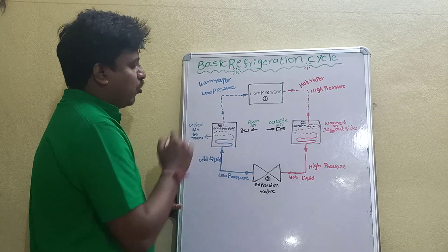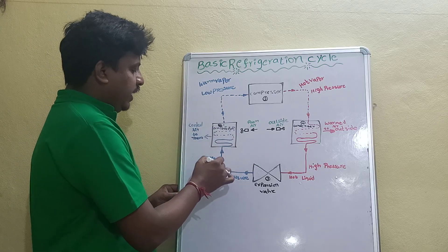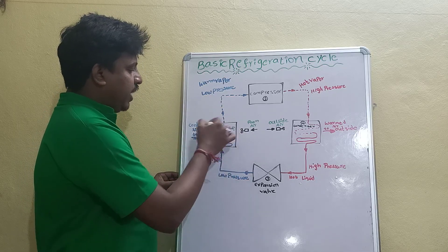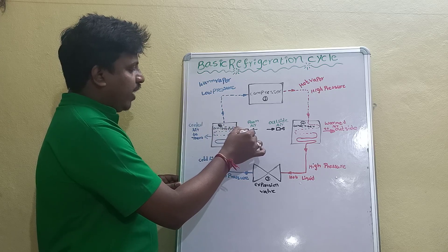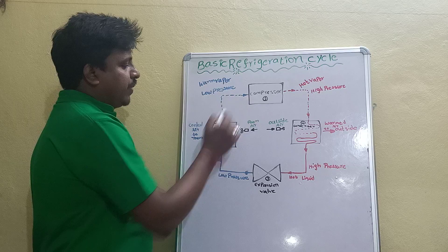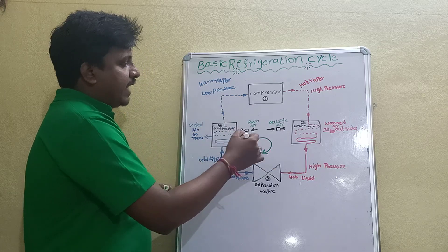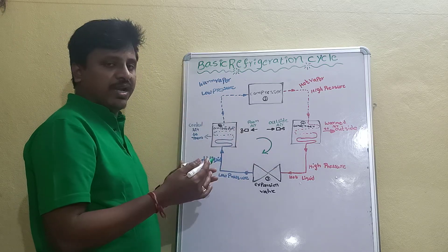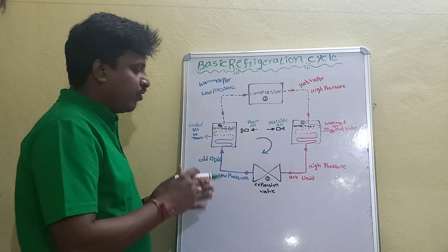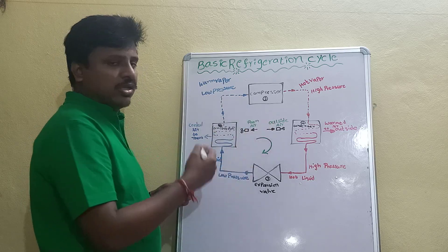We have an indoor unit. This is the evaporator coil — we have a fan and we will change the liquid to vapor. We will change the temperature here and complete the cycle. We will change the gas and vapor, and change the liquid back to high liquid.